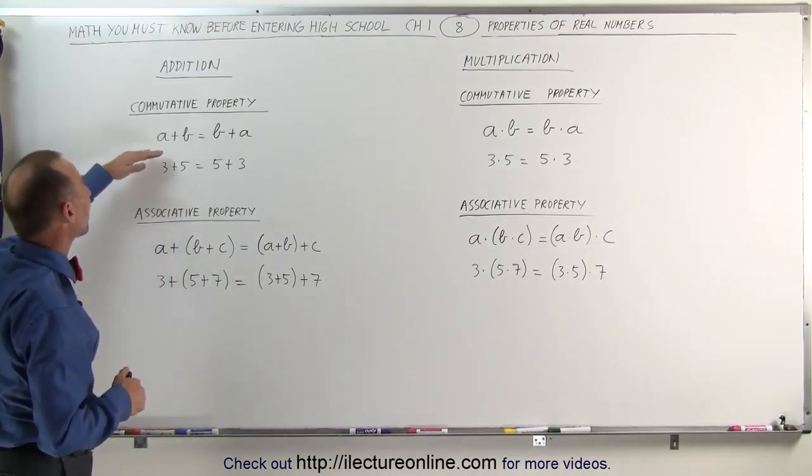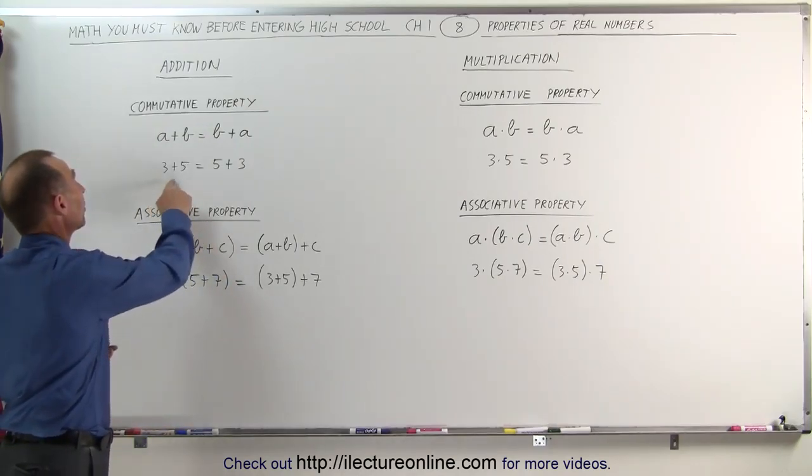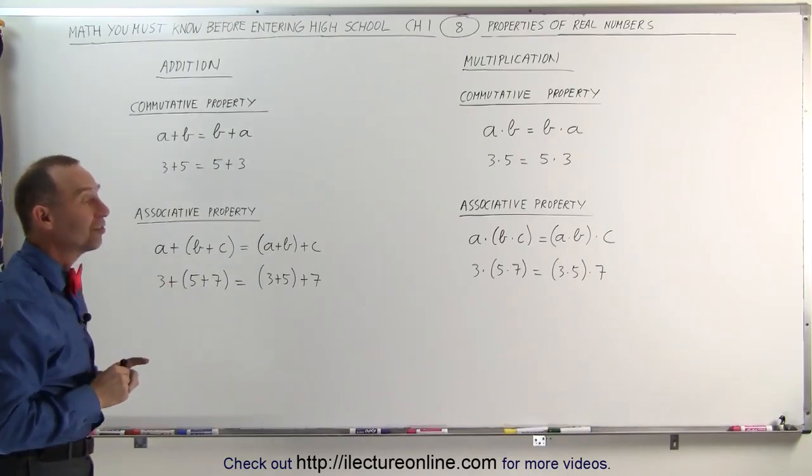For example, the numbers A plus B, is that the same as the numbers B plus A? Well, it turns out it is because of the commutative property, which means we can move numbers around. We can move the A last and B first, and we get the exact same result.